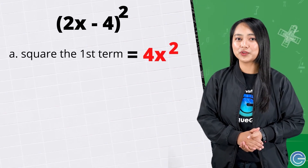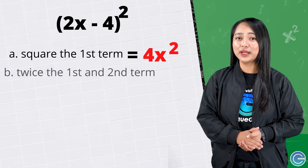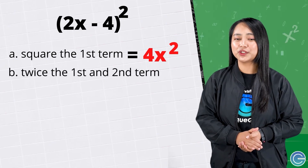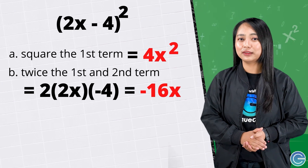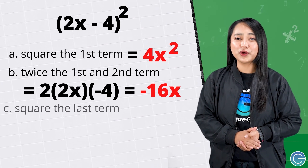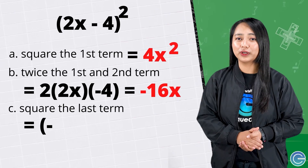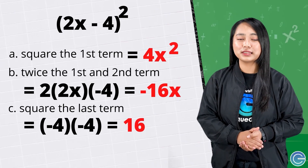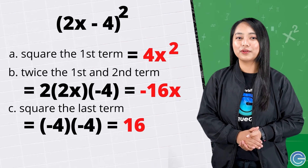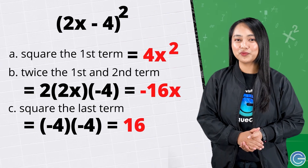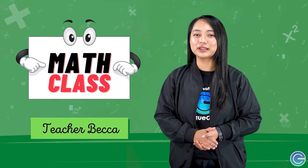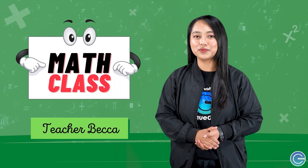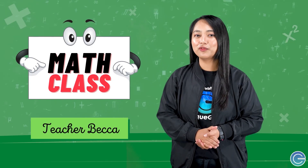Next example: the square of 2x minus 4. Same process — square the first term: that gives us 4x squared. Next, twice the first and second term: 2 times 2x times negative 4 gives us negative 16x. Lastly, square the last term: negative 4 squared gives us positive 16. Therefore the square of 2x minus 4 is equal to 4x squared minus 16x plus 16. And that's it for today — thank you for listening and see you again in my next video. This is Teacher Becca for Click Chain.